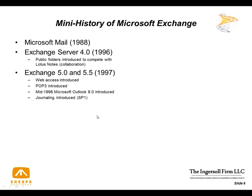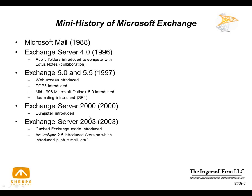Exchange 5.0 and 5.5 came out a year later, and interestingly, the first iteration of being able to journal email was available way back in 1997. Microsoft also introduced Outlook Web Access — the ability to get your email through the internet — at that stage. Exchange Server 2000 introduced the concept of the dumpster: when an end user deletes an item, the items are still retained on the server. It was a relatively rudimentary dumpster compared to what we have today.